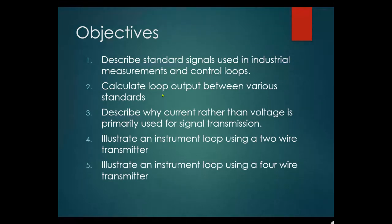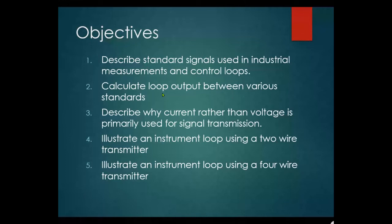Illustrate an instrument loop using a four-wire transmitter. In a four-wire transmitter, two wires are power wires and the other two are loop wires. This is used when the loop requires a lot of power — for example, a mag meter requires a lot of power, so it uses a four-wire system where two wires are just power wires.